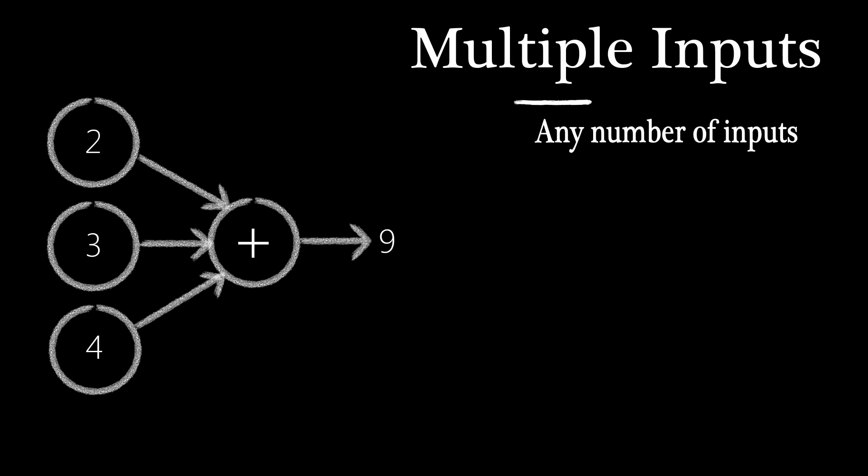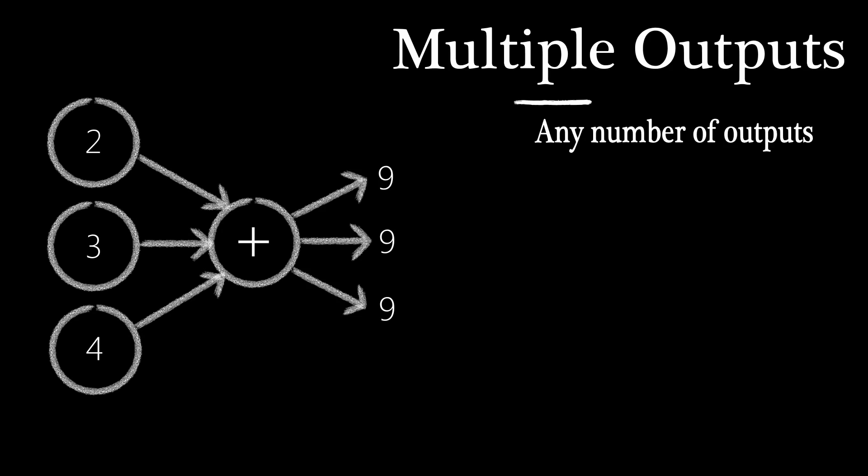Nodes can have any number of inputs. In this case, the same operation is performed on all inputs. Nodes can also have any number of outputs, too. Here, the result is duplicated for each output.